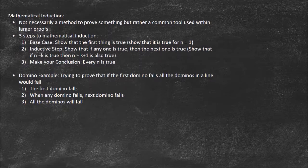There are three steps to mathematical induction. First, you start with the base case — you show that the first thing is true, so you show that it's true for n equals 1. Then next, you use the inductive step. You show that if any single element is true, then the next one has to be true. So you show that if n equals k is true, then n equals k plus 1 is also true.